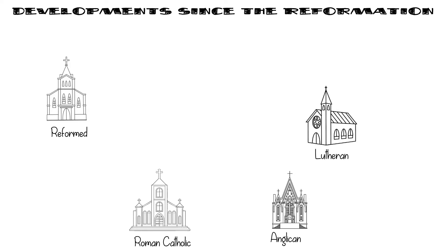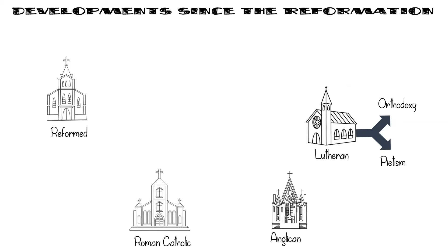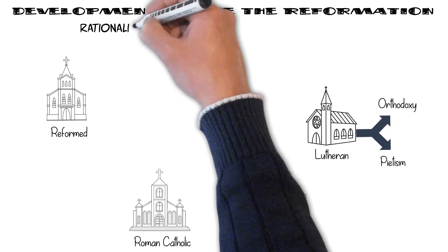We also saw how the Lutherans became very focused on teaching correct information about God in order to help their members understand why Lutherans were in line with the Bible. This became known as the Age of Lutheran Orthodoxy. We also saw that their heavy focus on having facts straight about God eventually led to a reaction called pietism, which moved focus away from your mind and onto your personal devotion or piety — while pietism was spreading like wildfire, there was another major movement also spreading fast: rationalism.